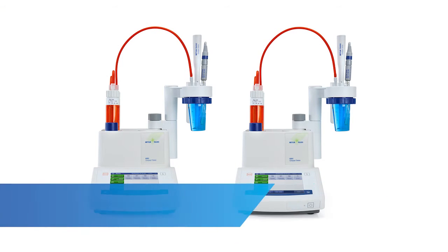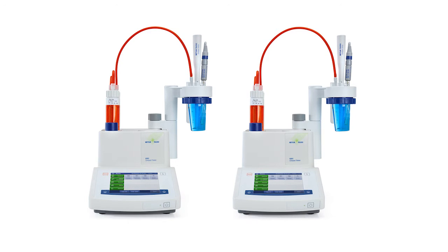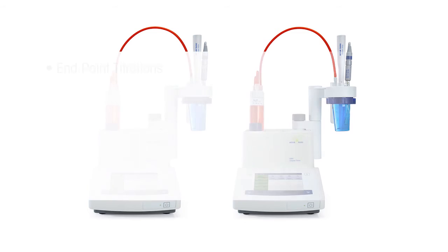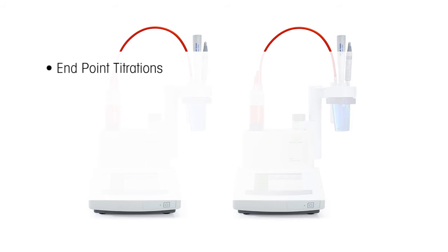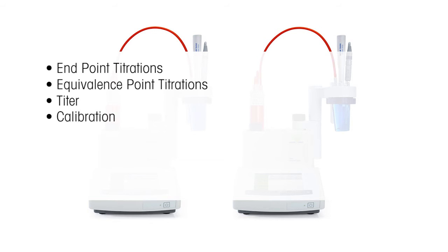A method is a set of instructions the titrator follows in order to accomplish its various titrations. The compact titrator's standard methods include the following types: Endpoint titrations, primarily used when titrating to a pH endpoint; Equivalence point titrations, used for non-pH titrations such as salt content with silver nitrate or redox titrations, but can also be used for pH titrations; Tighter methods, used for standardizing titrant with a standard substance; Calibration methods, used for sensor calibration — usually for pH sensors but also for ion-specific electrodes; and the pH sensor test method, used to check the slope, zero point, and drift of a pH sensor, like an electrode health check. Measure methods are used for controlled transfer of a sensor measuring value, such as a series of pH measurements.